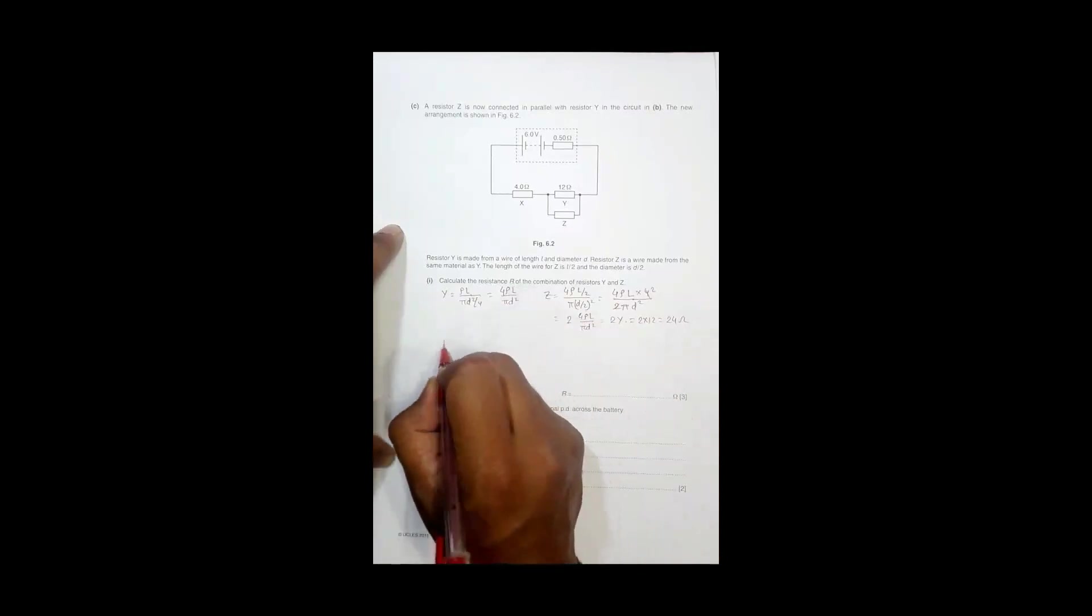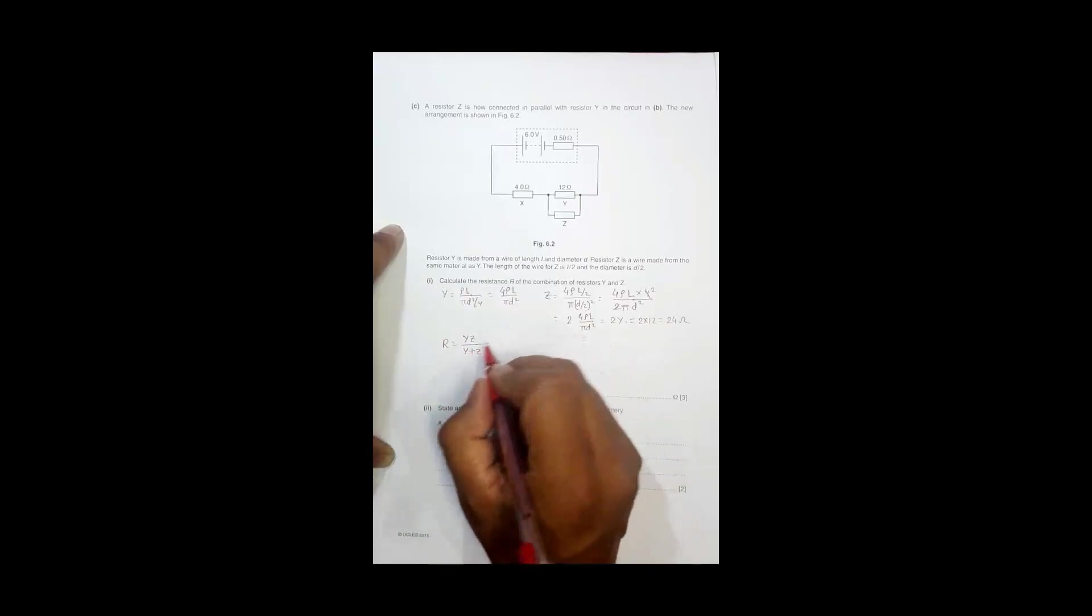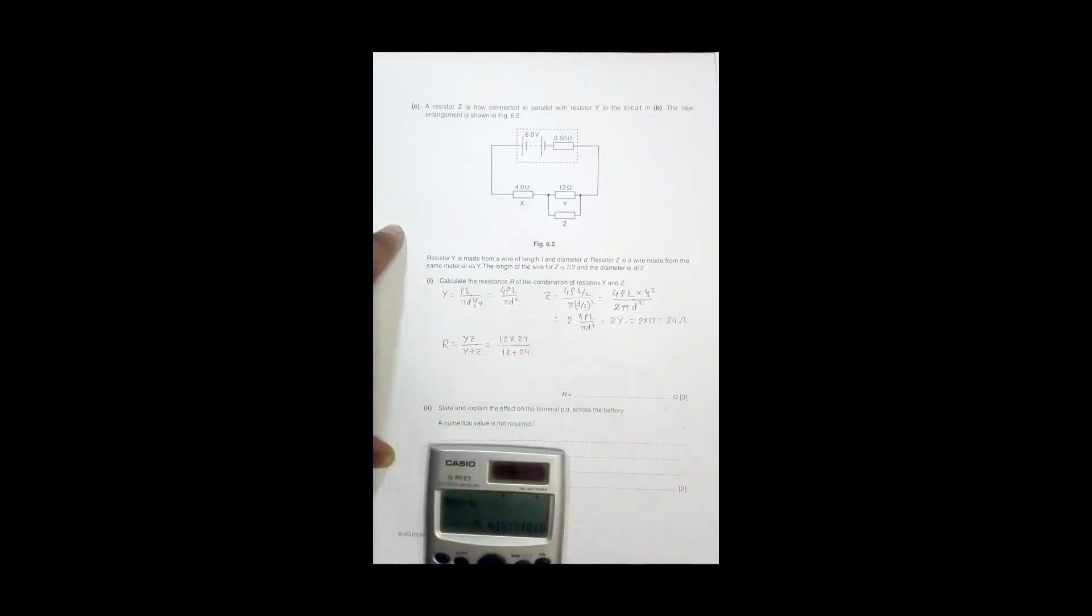The total resistance R is equal to, R is equal to Y Z divided by Y plus Z. This is the direct formula for the parallel resistance. So Y is 12 into 24 by 12 plus 24, so the value will be equal to 12 into 24 divided by 12 plus 24, so 36.